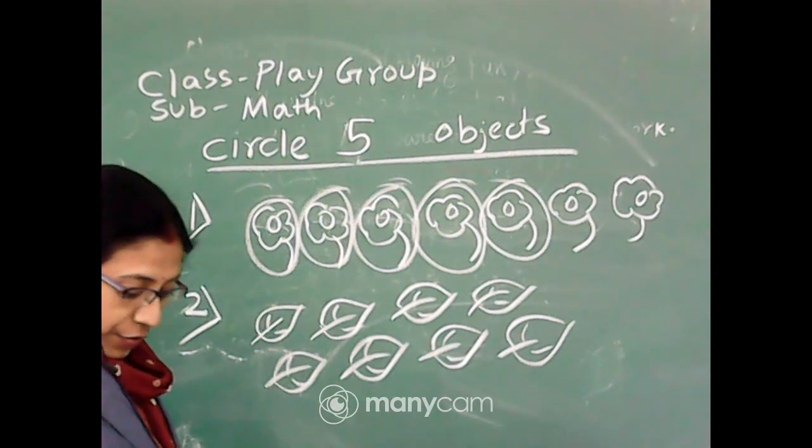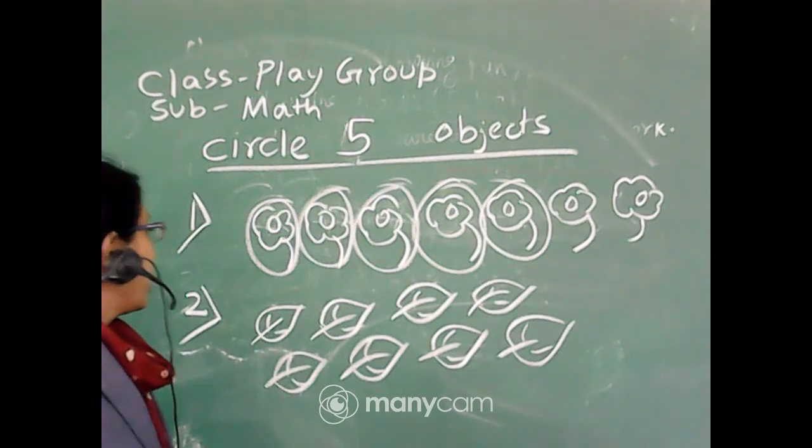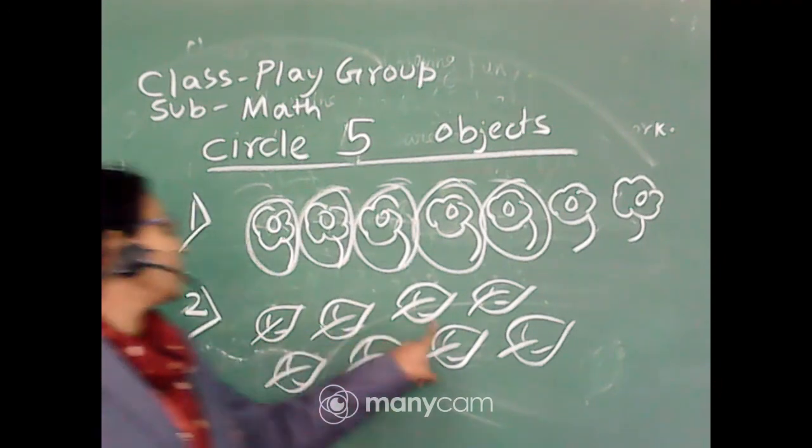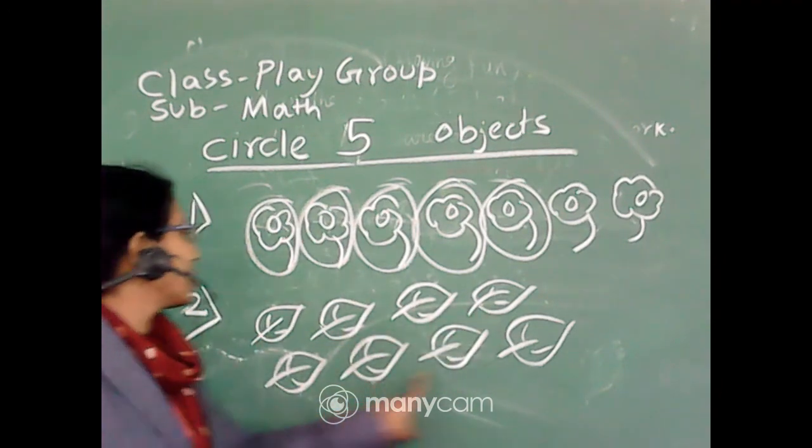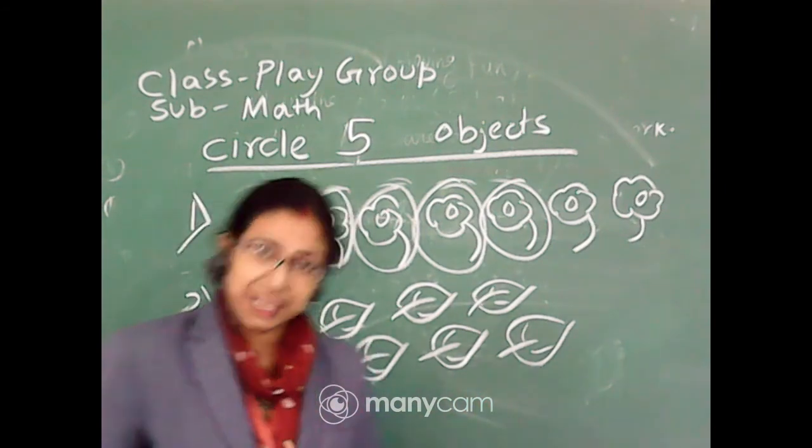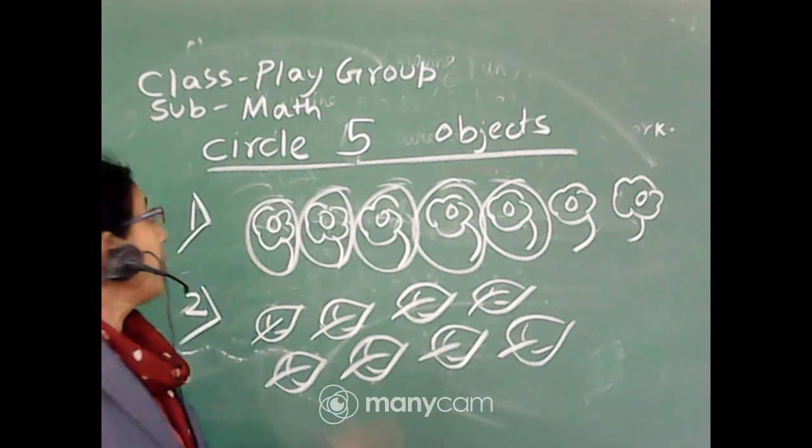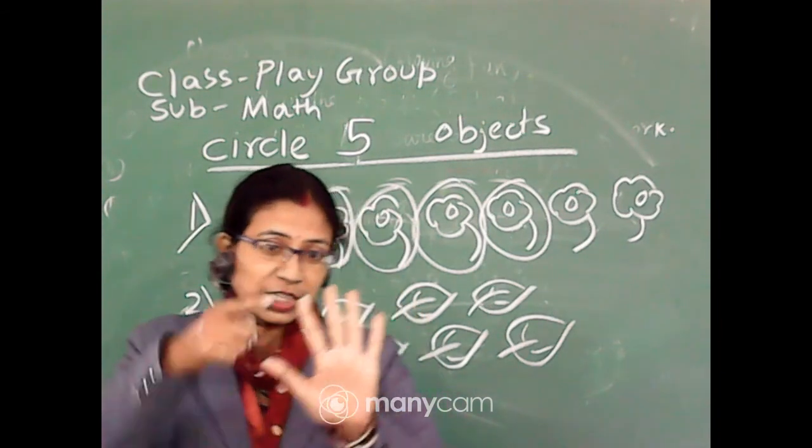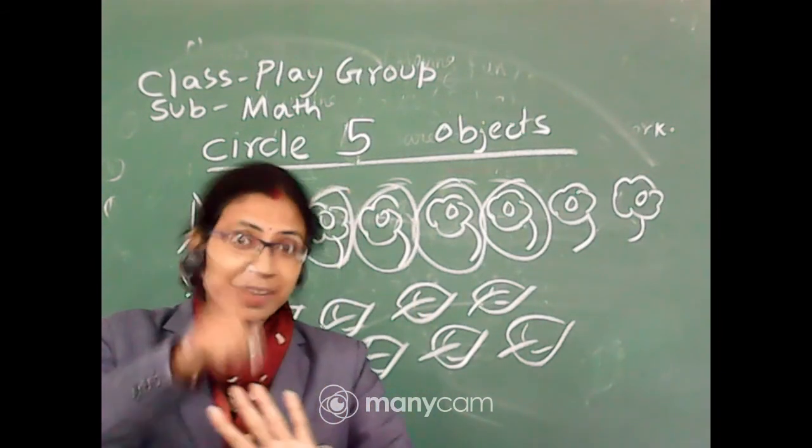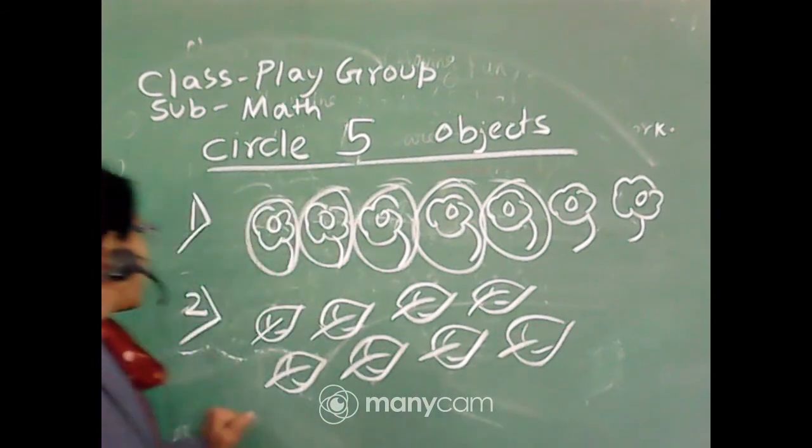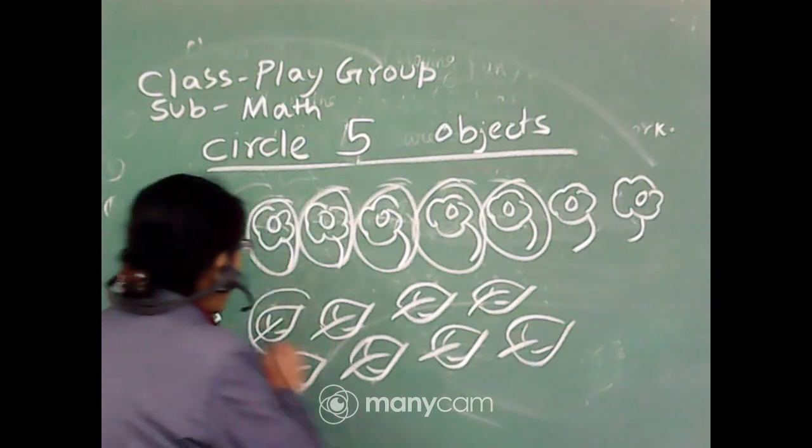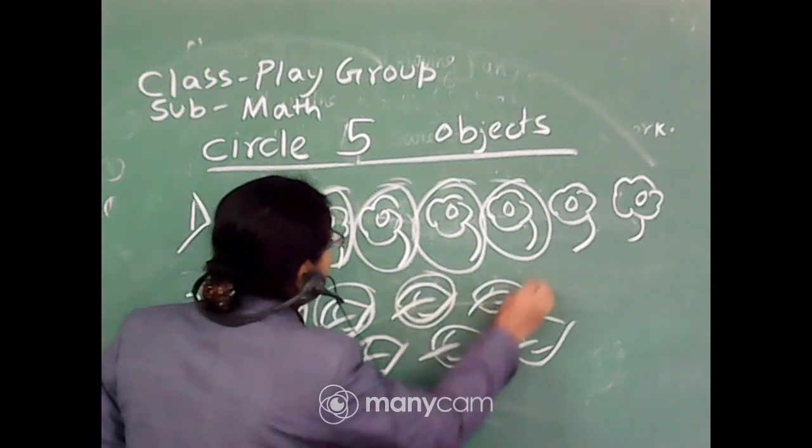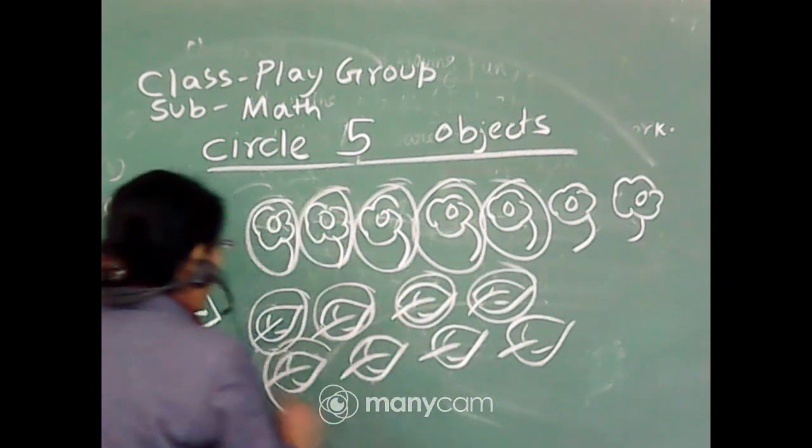Now there are a few leaves. At first we count: how many leaves are there? One, two, three, four, five, six, seven, eight. Eight leaves are there. But what we have to do? We have to circle five objects. One, two, three, four, five. Clear? So we circle out one, two, three, four, and five. We have done.